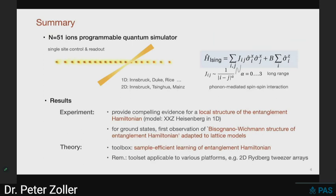We have the opportunity of using Rainer Blatt and Christian Rohe's quantum simulator in Innsbruck — that's a traditional N equal to 51 ion chain, a programmable quantum simulator. It natively has an Ising Hamiltonian with long-range interactions. What I find exciting is that in the meantime we also have 2D systems available. In Innsbruck there are systems with 200 ions in 2D. In Jinghua, Lu Mingduan is talking about 1,000 ions in the cryogenic trap. The story that I'm telling you should in principle also work for these high-dimensional cases, and of course should also work for completely other platforms.